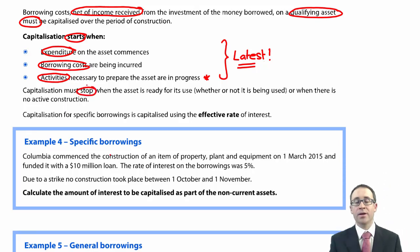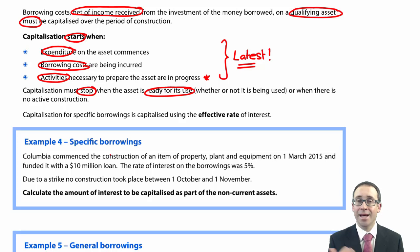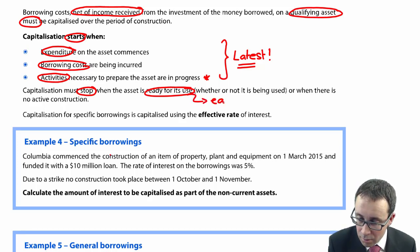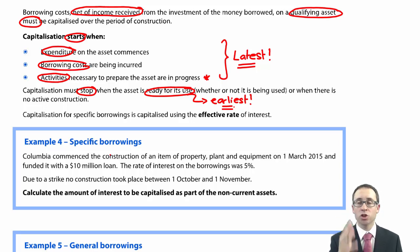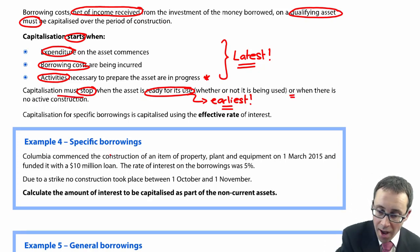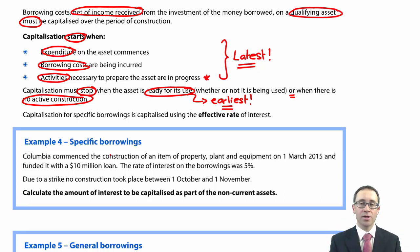Capitalisation stops when the asset is ready for use — that tends to be the earliest date, erring on the side of prudence. We look at when it is ready for use rather than when it is actually used, because that is when the activities are likely to have stopped. Note that if there is no active construction — for example due to a strike or unexpected bad weather — then the criteria for capitalisation are not met, and you would go back to expensing the interest.